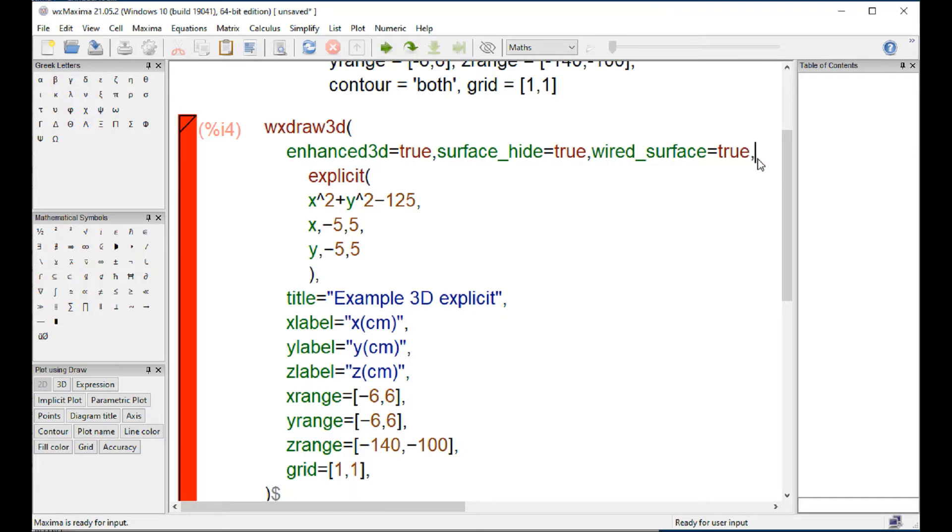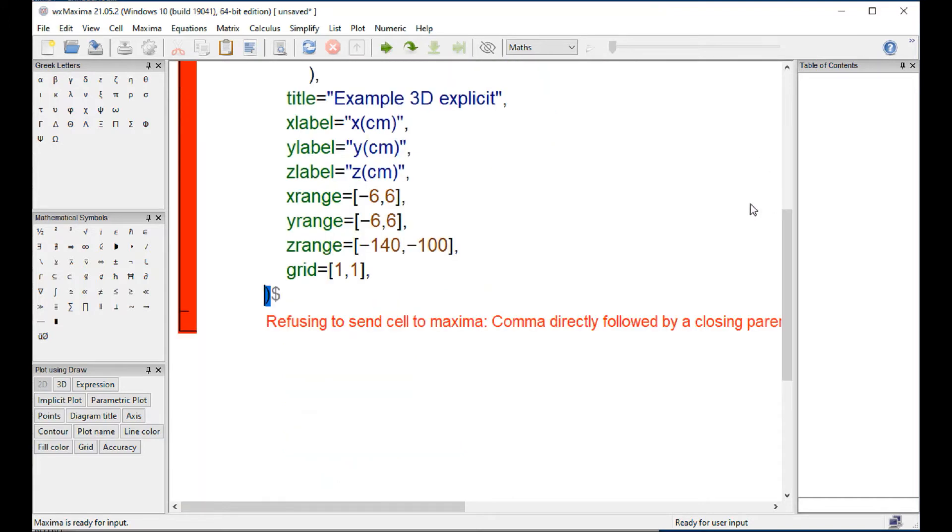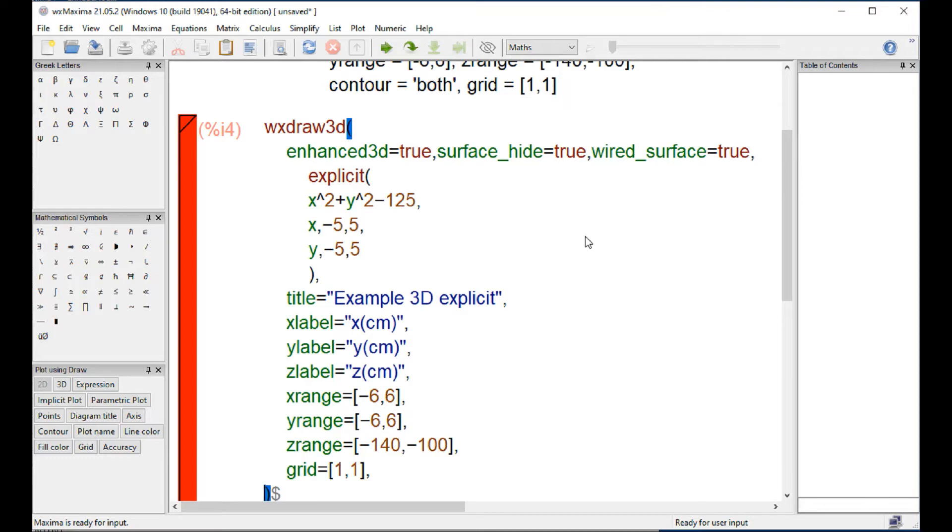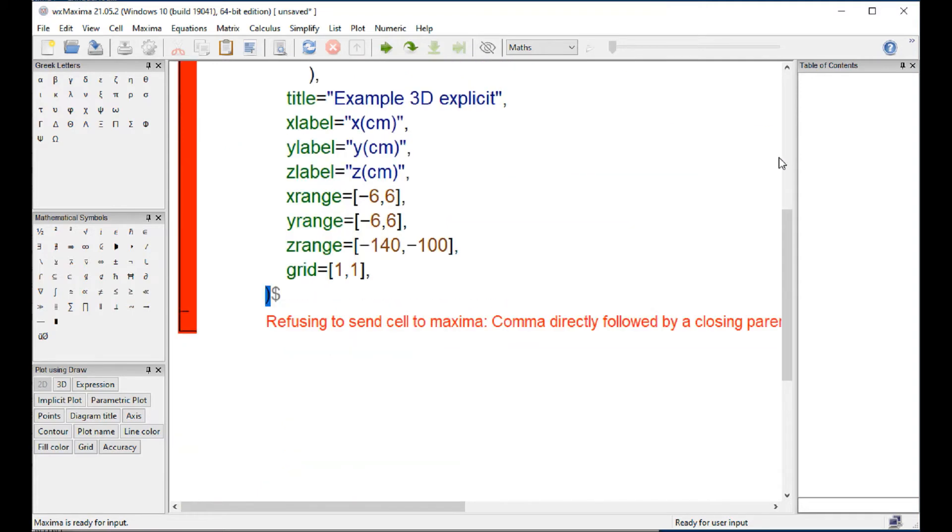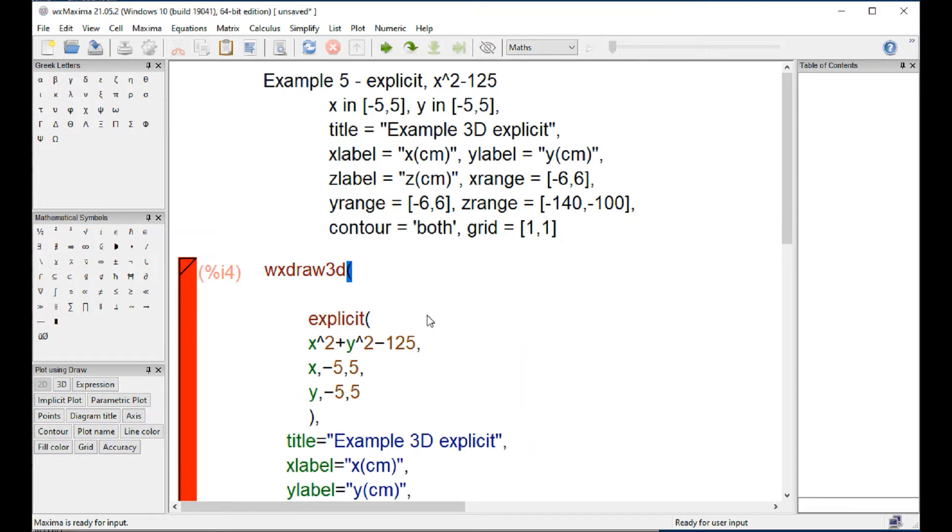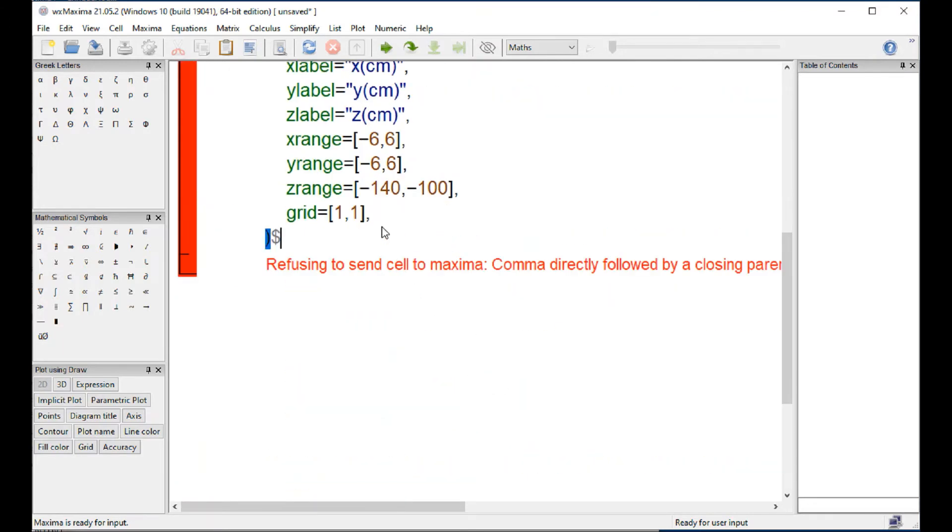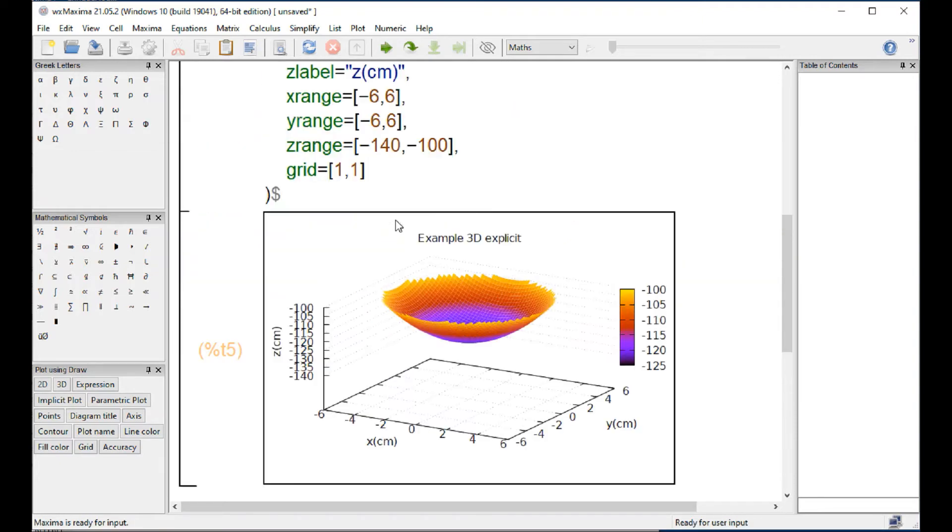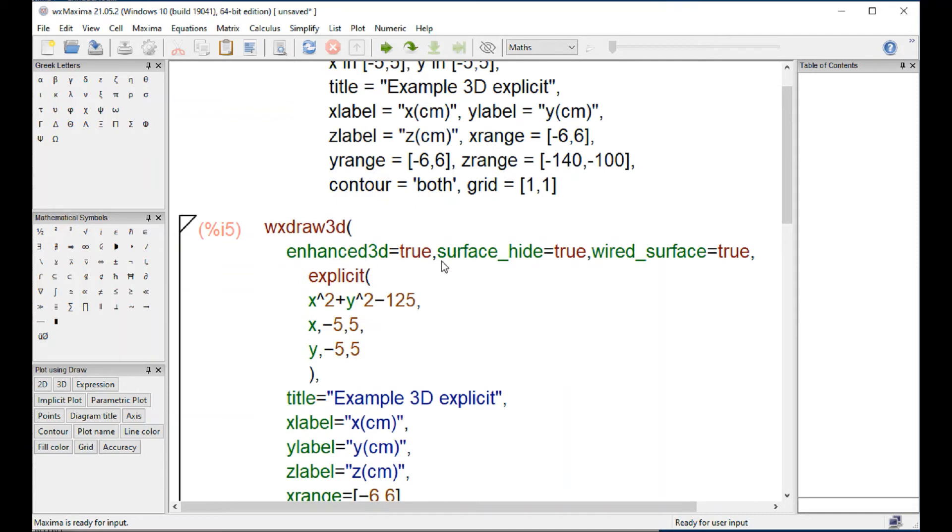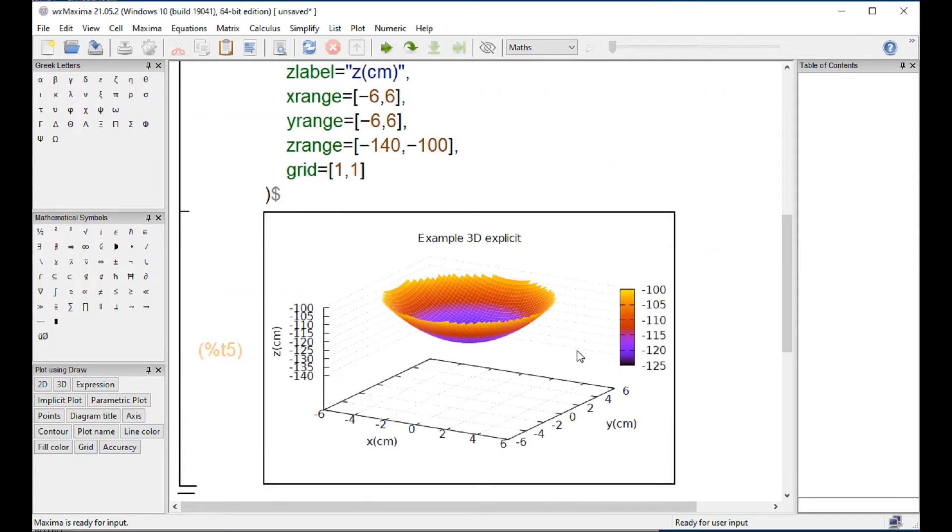There's a missing comma, yeah. Enhance 3D to server. No, it's not working. Let me try that again. Oh, I left a comma here, so it may have worked. Let's do control Z. Take out that comma. Yeah. So that line, enhanced 3D surface height true, wire surface equal true, produces a different texture for the graph.